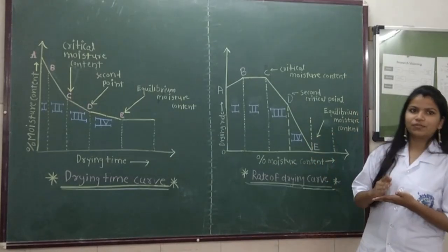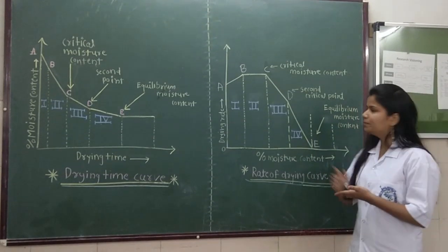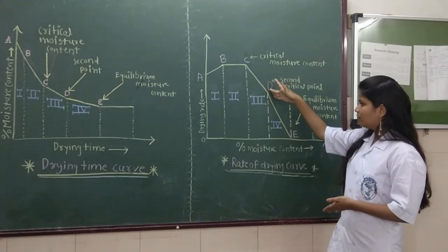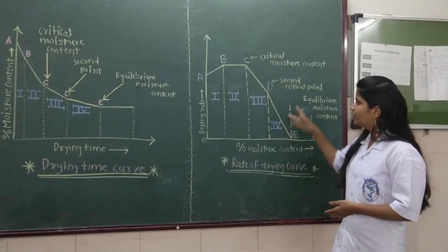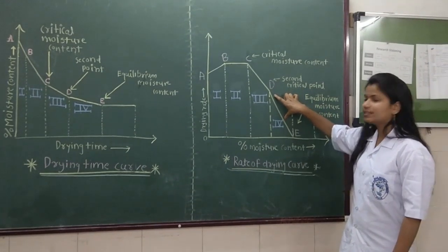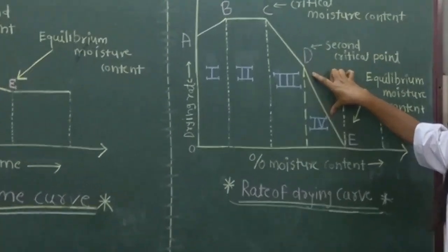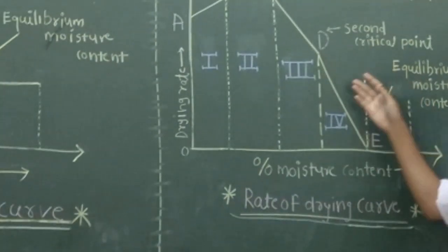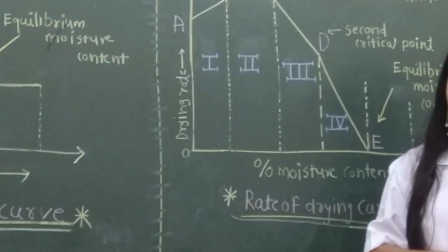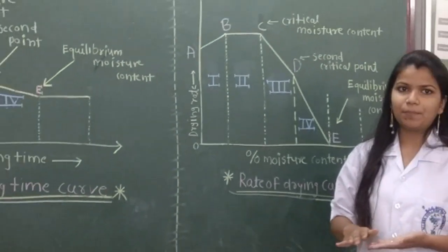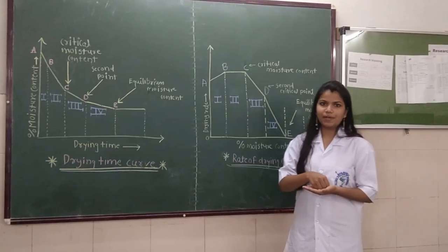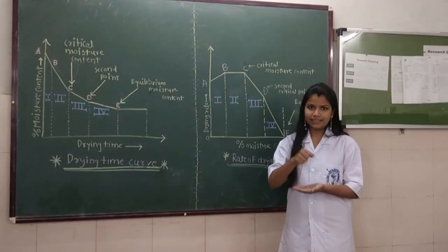At the end of the first falling rate period, the drying rate decreases rapidly. This is the second falling rate period. In this phase, almost the entire drying process is completed. If there is any moisture left behind, it cannot escape.